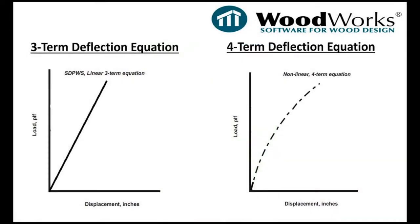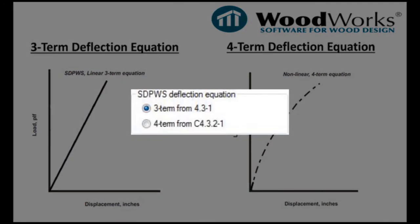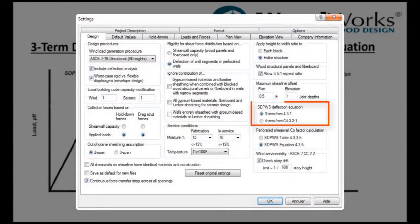and is essentially a linearization of the four-term deflection equation. These graphs represent the load displacement curve for both equations for a wood-sheeted shearwall. By default, the three-term deflection equation is selected, but you can toggle between the two equations in the Settings Design tab.